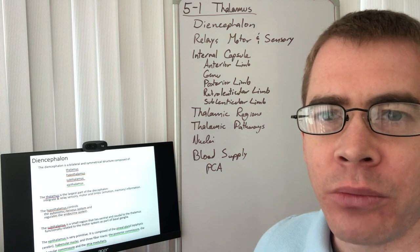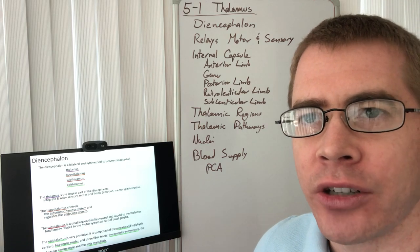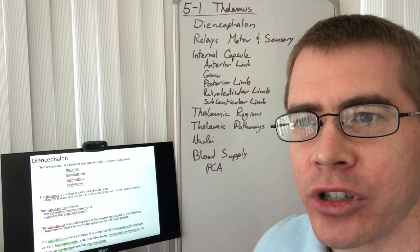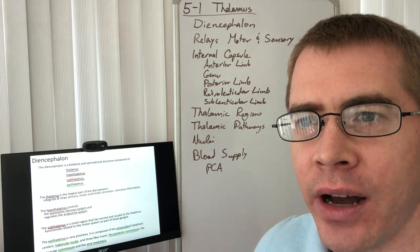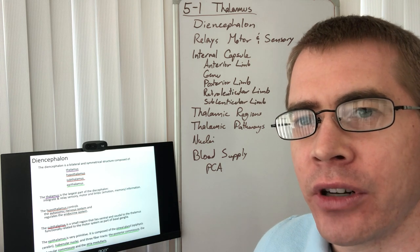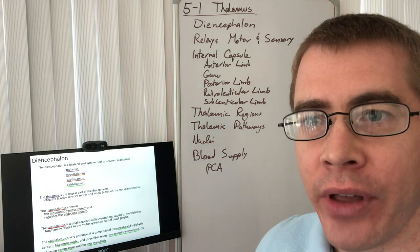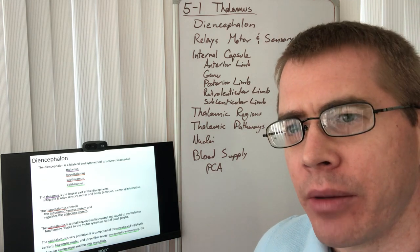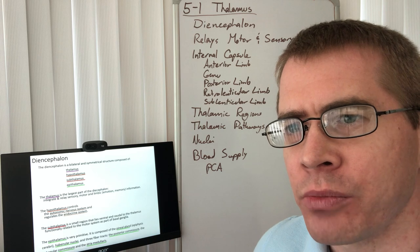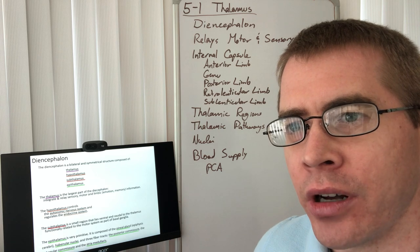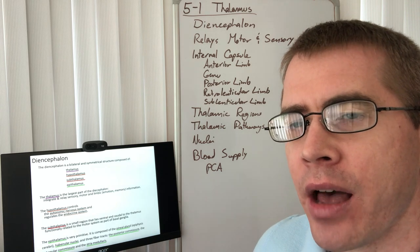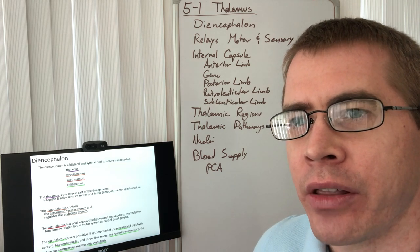Hi everyone, welcome to lecture 5-1 on the thalamus. The thalamus is part of the diencephalon. The diencephalon is composed of the thalamus, the hypothalamus, the subthalamus — which is a small portion of the basal ganglia — and the epithalamus.